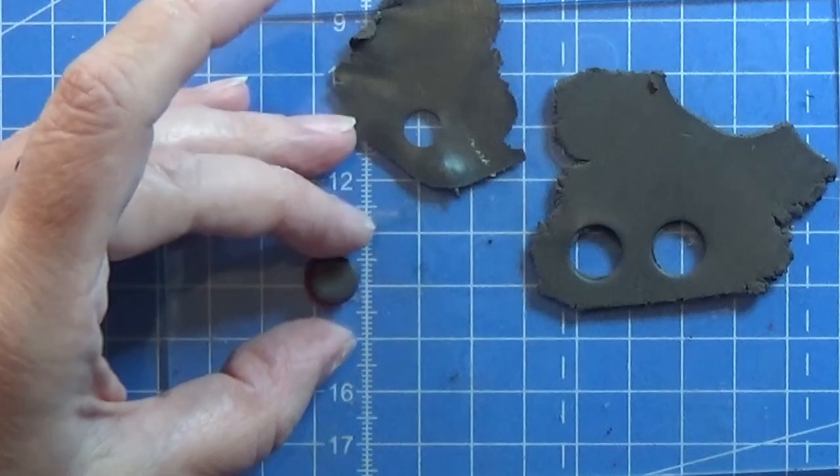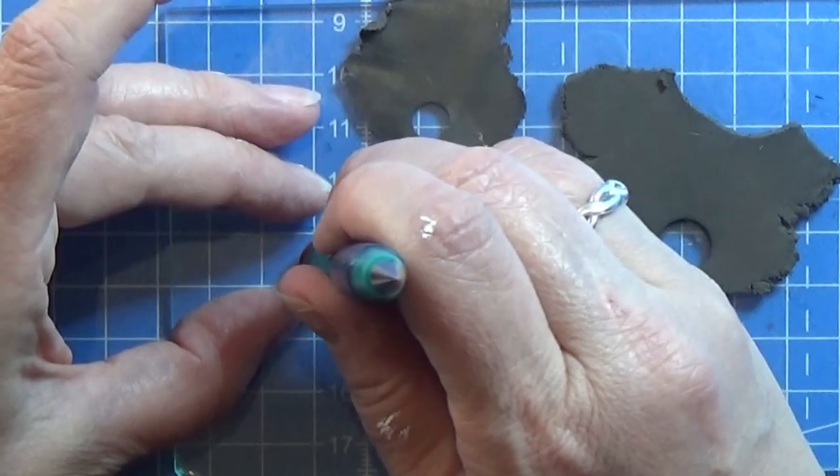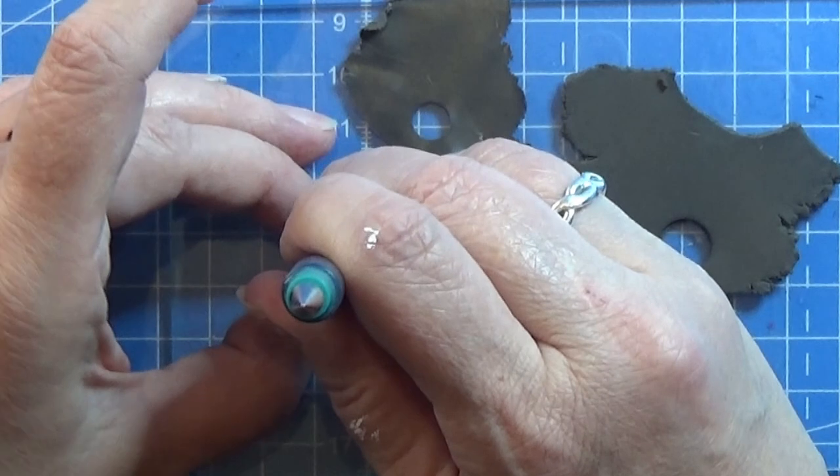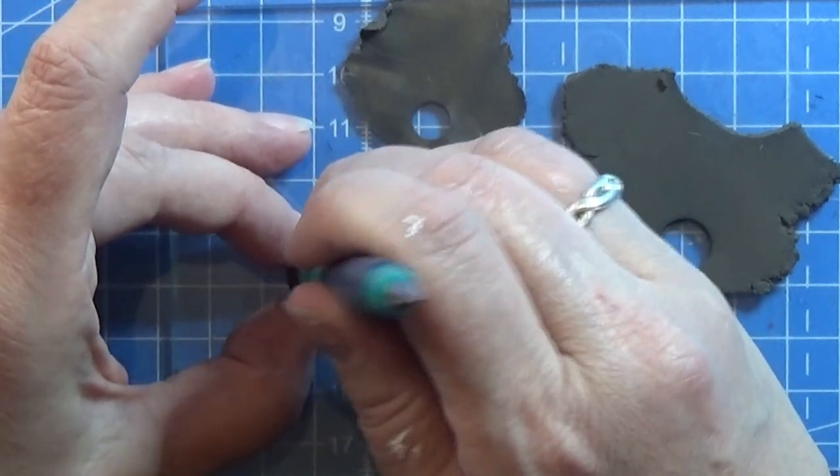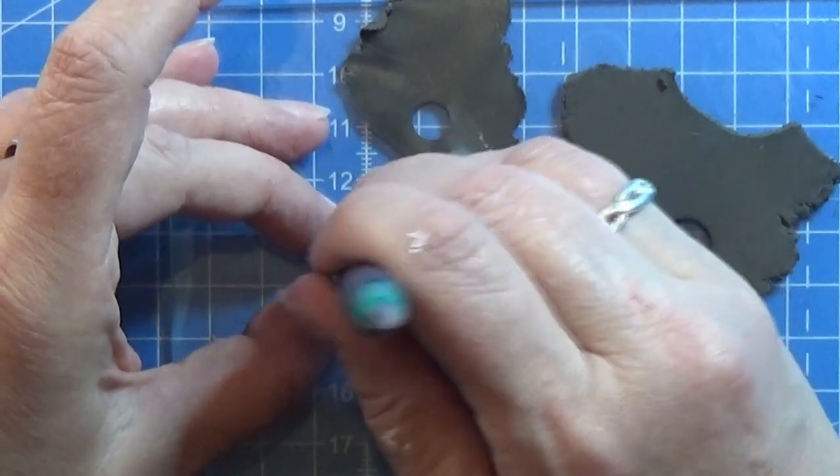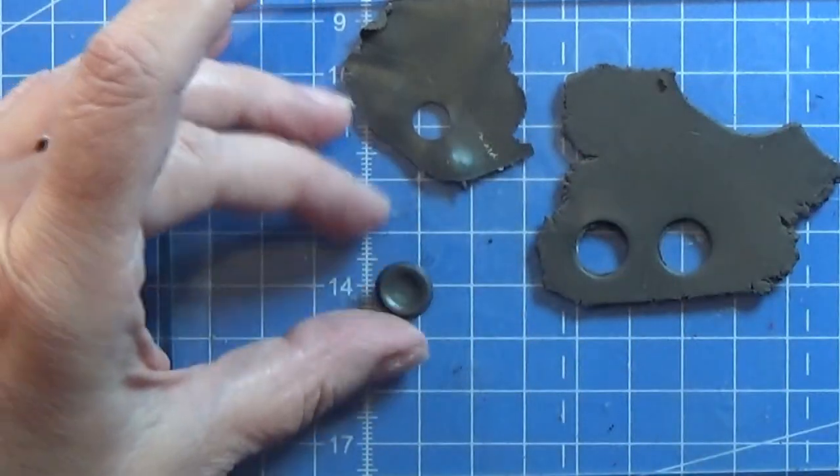Then I have this tool with a rounded end that I am just going to squeeze into the middle so I get this raised edge on the rim of this little ashtray like that.